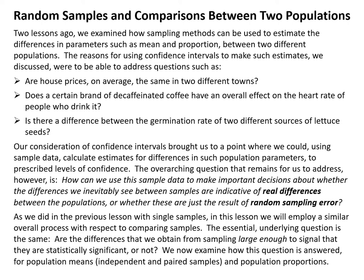As we did in the previous lesson with single samples, in this lesson we will employ a similar overall process with respect to comparing samples. The essential underlying question is the same: are the differences that we obtain from sampling large enough to signal that they are statistically significant? We now examine how this question is answered for population means — both independent and paired samples — and population proportions.